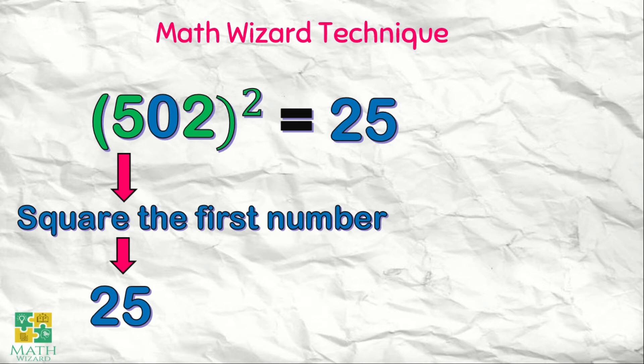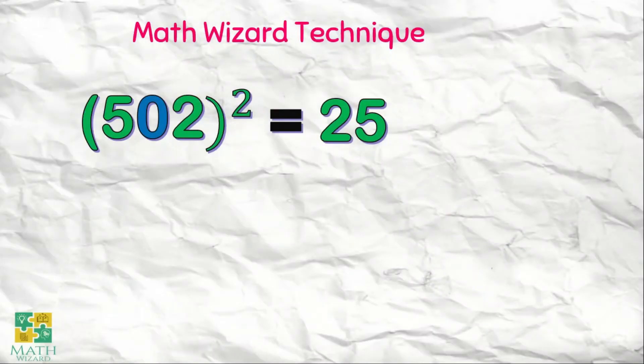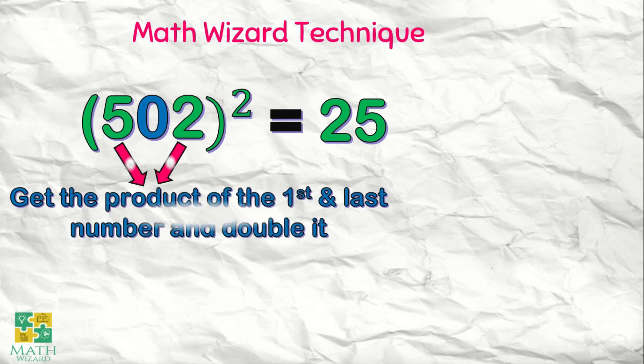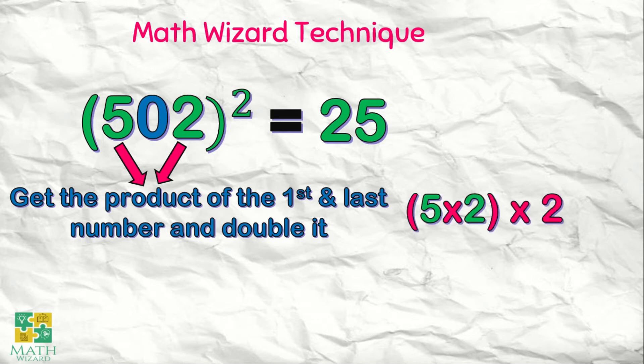The second step is to get the product of the first and the last number, and double it. Five is the first number and two is the last number. Five times two is ten. Double it — times two — the answer is twenty.